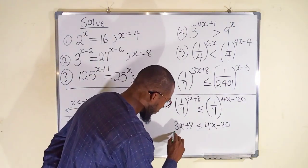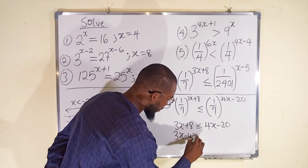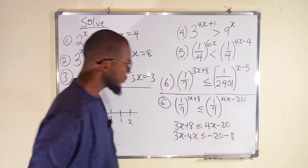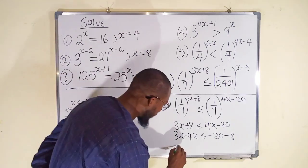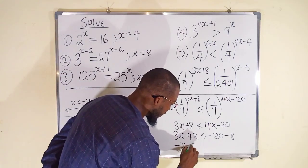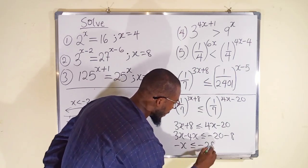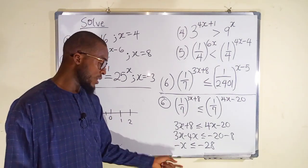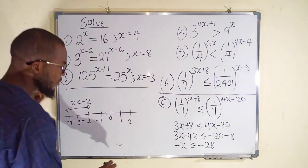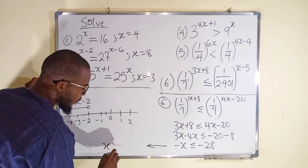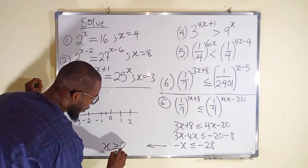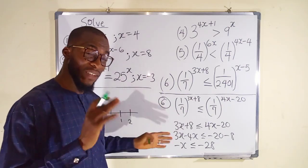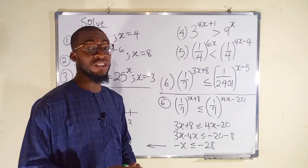Bring the 4x to the left: 3x minus 4x is less than or equal to negative 20. If the 8 crosses over it becomes negative 8. So we have negative x less than or equal to negative 28. We multiply both sides by negative 1 — remember, when you multiply both sides by a negative number, the direction of the inequality changes. Therefore x is greater than or equal to 28.